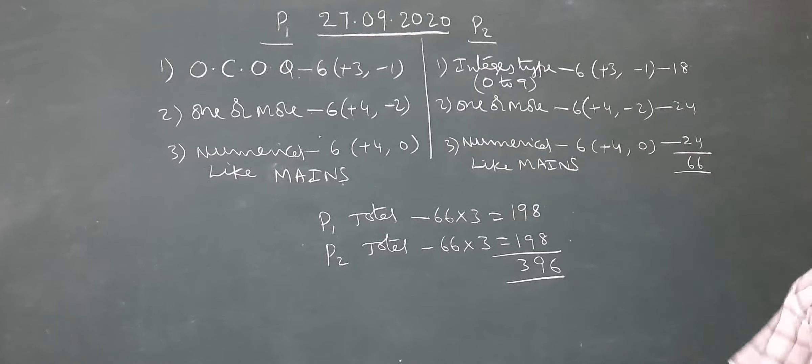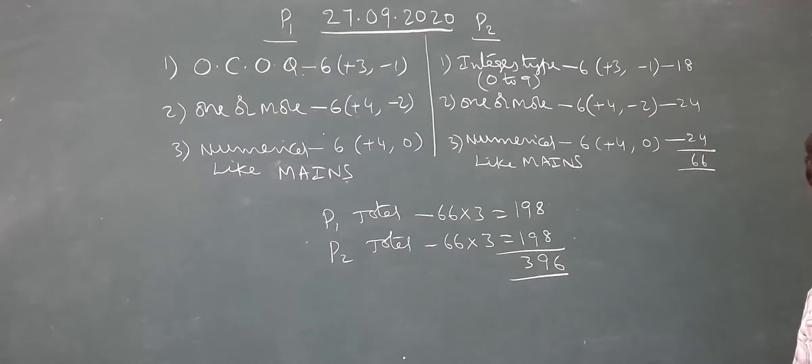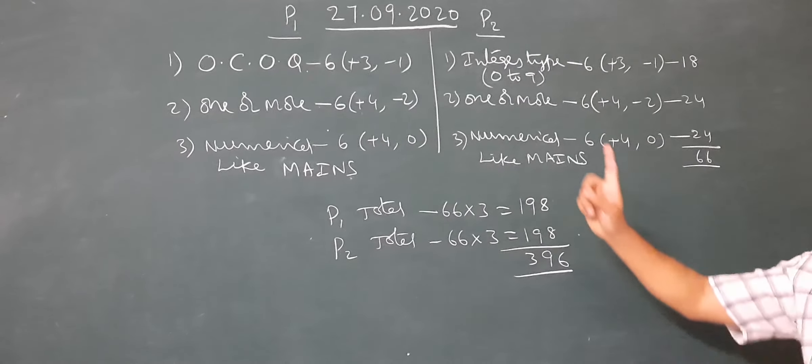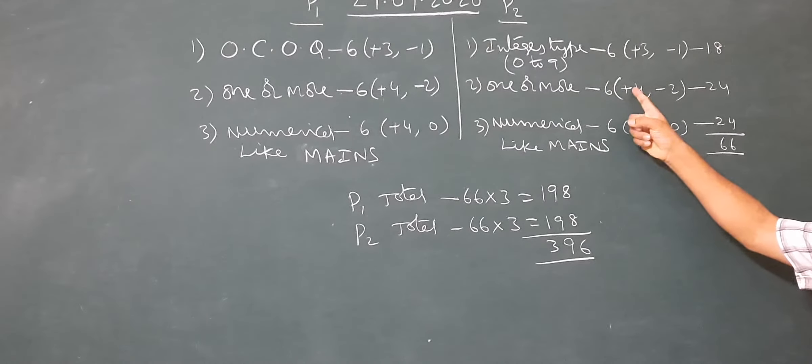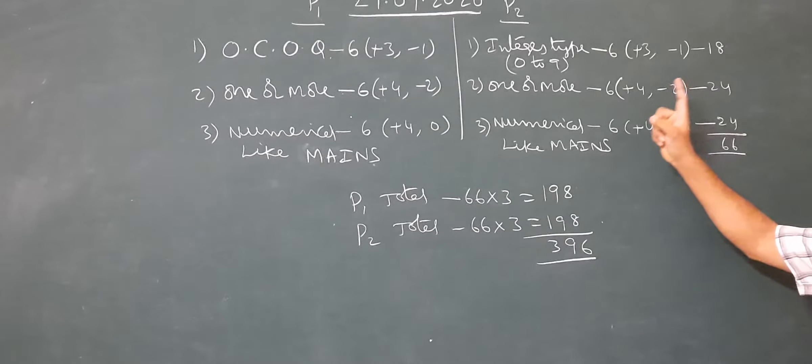Second section: one or more options. That contains six questions, one or more options. Partial marking is there, the same type of pattern as paper one. Here also, plus four, minus two.